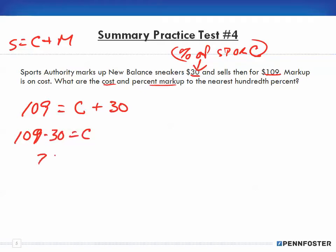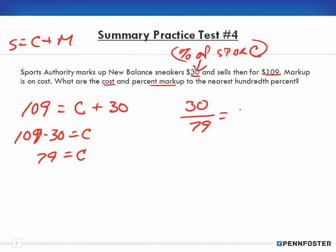So the question is: what is that percent? But for right now it's just telling us the markup is $30. When we do the math: $109 minus $30 gives us $79 as our cost. If we know the markup is $30 and the cost is $79, we divide one by the other.